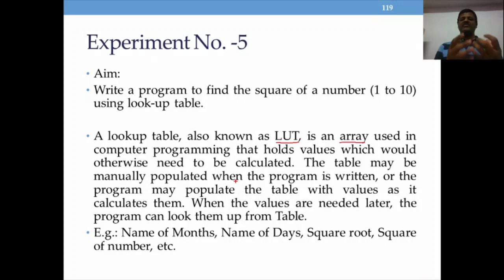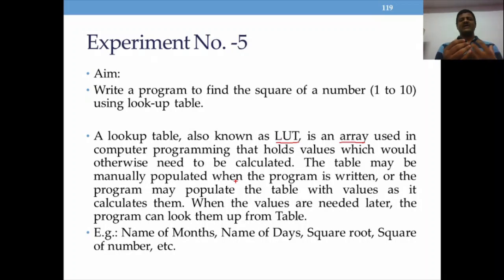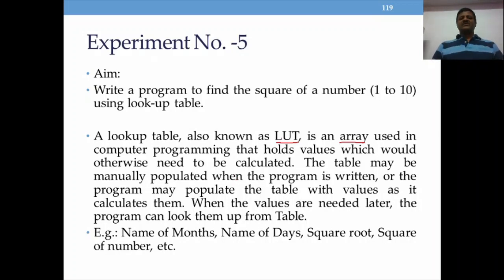Examples of LUTs include names of months, names of days, and squares of numbers. For the names of months, there's no formula — only fixed names like January, February up to December, so you manually enter them. A good modern example is digital cameras, where LUT tables are used to enhance captured images — you can immediately change brightness, contrast, or crop photos. Today our discussion focuses only on the square of numbers.